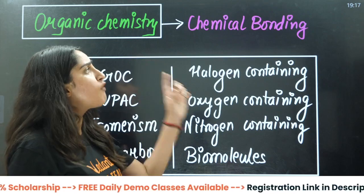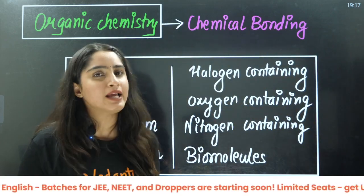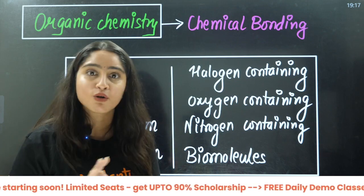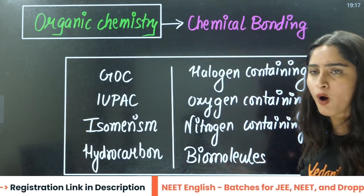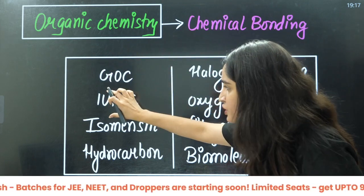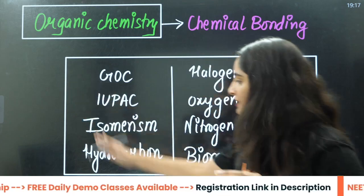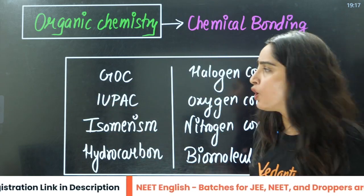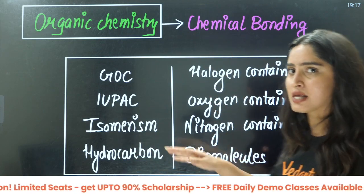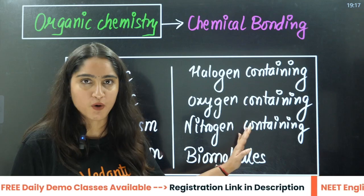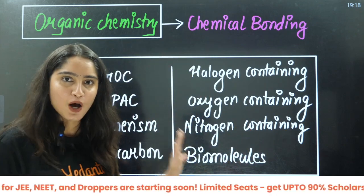For organic chemistry, firstly you must understand Chemical Bonding — without it, organic chemistry is not possible. If you know Chemical Bonding, you know how atoms and molecules react and what the structure is. After Chemical Bonding, start with GOC (General Organic Chemistry), then IUPAC, then Isomerism — without GOC you won't understand a single word of those chapters. Then proceed with Hydrocarbons, followed by Halogen-containing compounds, Oxygen- or Nitrogen-containing compounds. Biomolecules is a mixture of chemistry and biology.